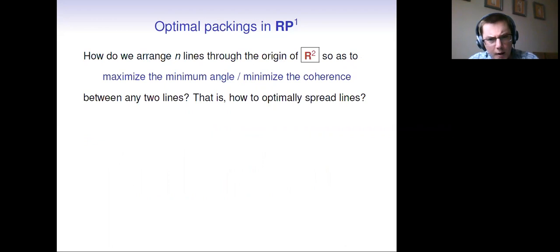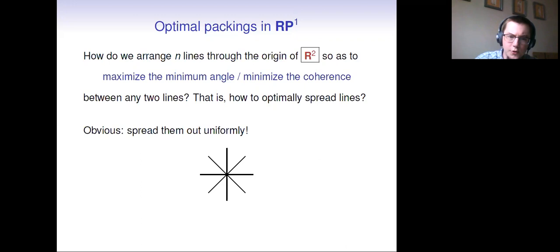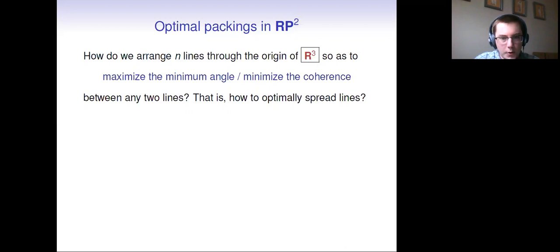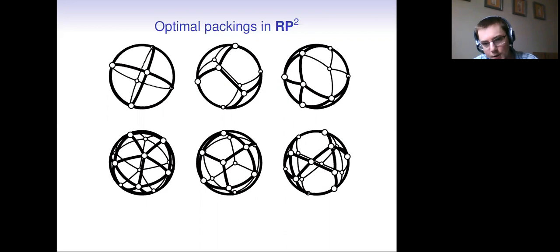I'd like to start by talking about globally optimizing line packings. I'm taking these unit vectors that would make up the columns of a short fat matrix, and instead I'm thinking about the lines that they span in R^D. How do we arrange n lines to the origin of R^D so as to maximize the minimum angle? In other words, how do you optimally spread out lines? If you've never thought about this problem before, I hope you're thinking about it in R^2. You're trying to spread out lines through the origin of R^2. And I hope that you feel that you could just spread them out evenly. That seems like the only thing that you would try and it feels obvious and it's correct.